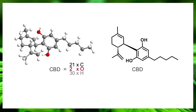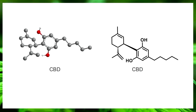We're going to start by focusing on CBD. On the right is what we refer to as a line angle structure — every bond, kink, or corner represents a carbon atom. The molecule has 21 of these carbon atoms. Those 30 hydrogens that decorate it we just remove; we know they're there, and then it starts to resemble the line angle structure.